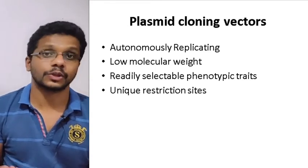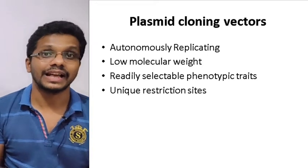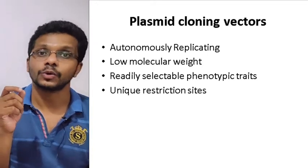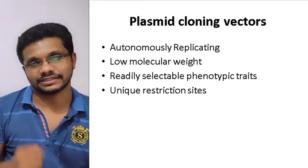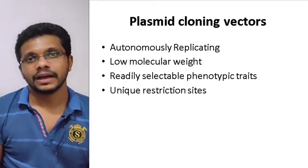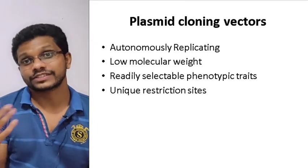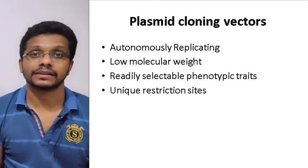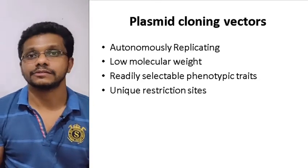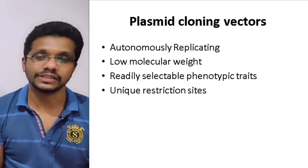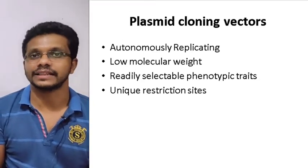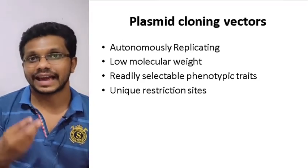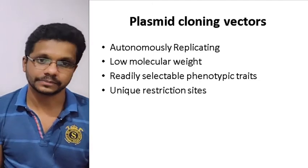All plasmid cloning vectors will have an origin of replication, and the host range of the particular plasmid vector is actually determined by the characteristics of the origin of replication.